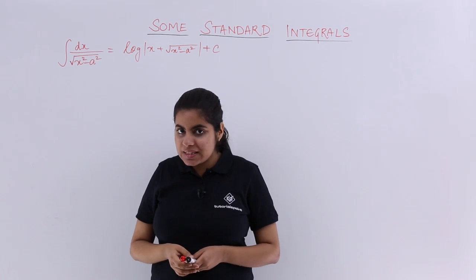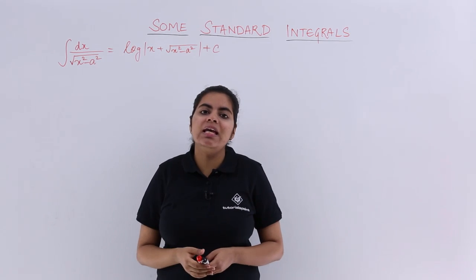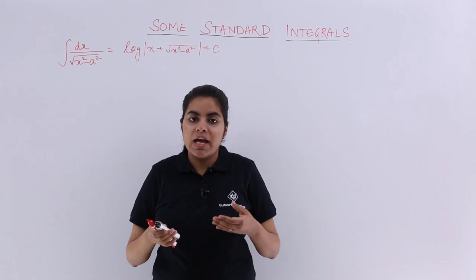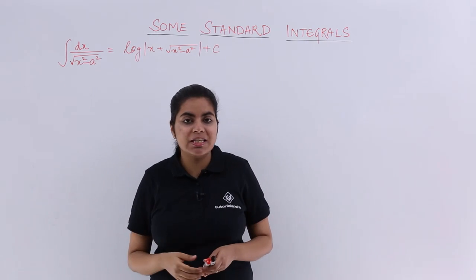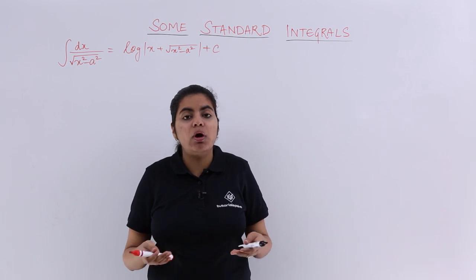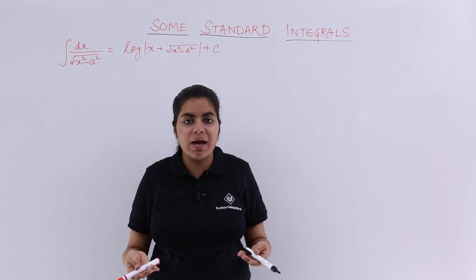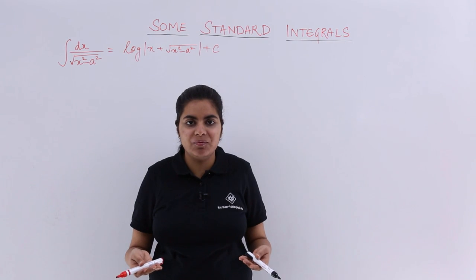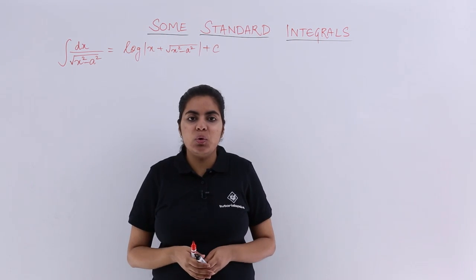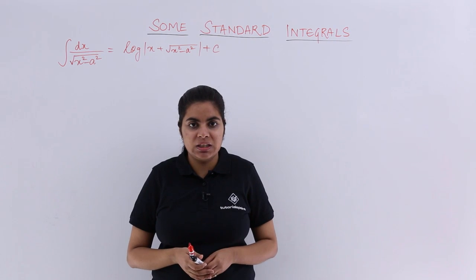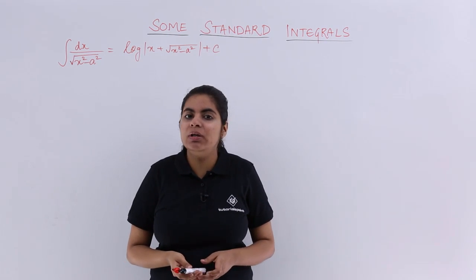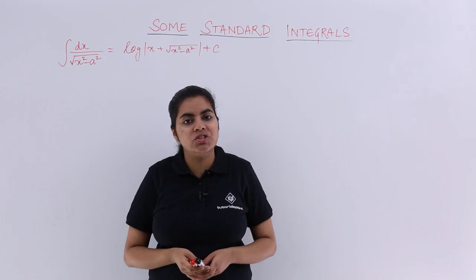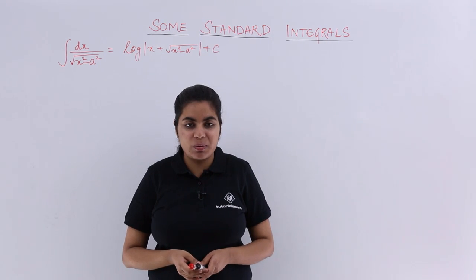So this time since we have under root, the things are not that simple. If I follow the similar methodology as in the previous videos of multiplication of x minus a times x plus a, what would we do? There is square root, it cannot be eliminated directly. So this time I go with trigonometric substitution, and not only in this video it will be helpful, it will be helpful in the next video as well and some questions in your mathematics courseware.